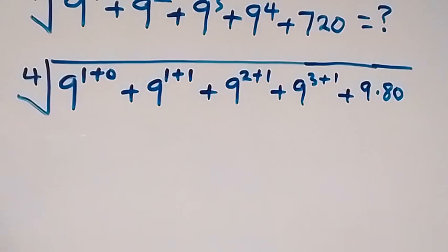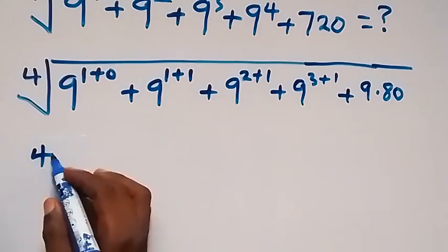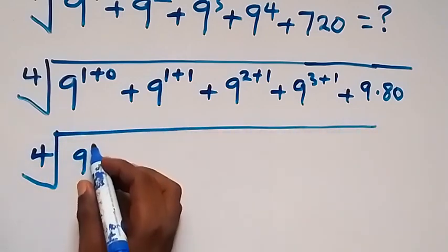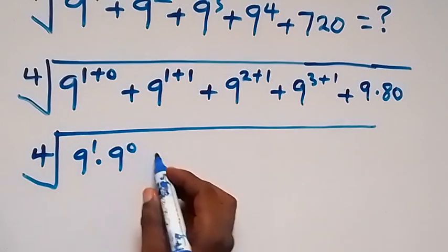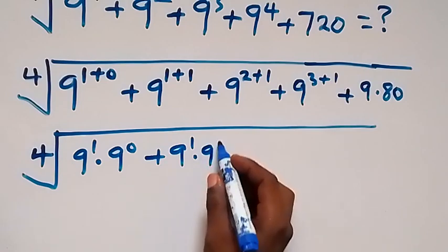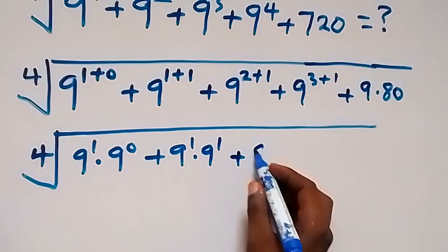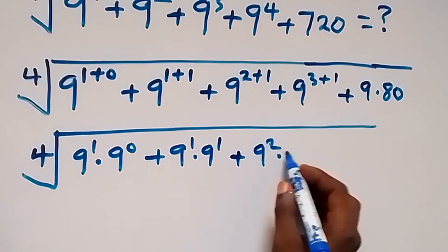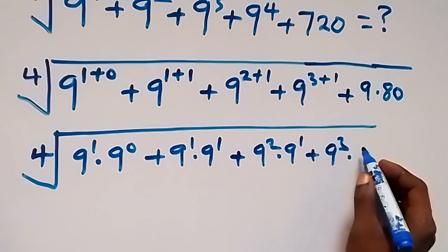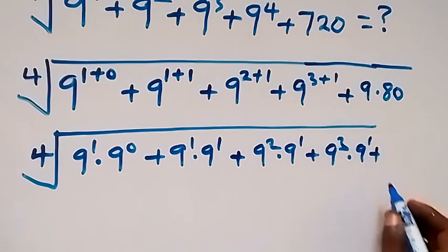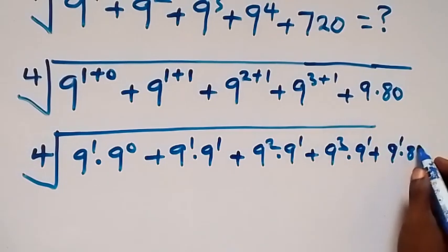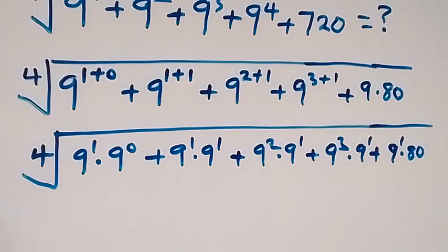In the next step we apply the law of indices, and this becomes the fourth root of 9 raised to power 1 times 9 raised to power 0, then plus 9 raised to power 1 times 9 raised to power 1, then plus 9 raised to power 2 times 9 raised to power 1, plus 9 raised to power 3 times 9 raised to power 1, then plus 9 raised to power 1 times 80.